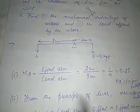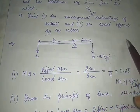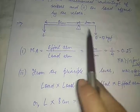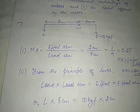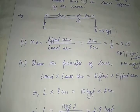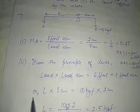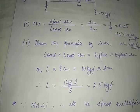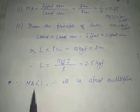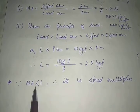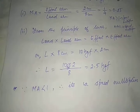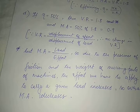The second part asks for the load offered by the cloth. We know the effort, effort arm, and load arm — we need to find the load. Using the principle of lever: load × load arm = effort × effort arm, so L × 8 centimeters = 10 kgf × 2 centimeters. We solve for the load from here. Since mechanical advantage is less than 1, it acts as a speed multiplier.